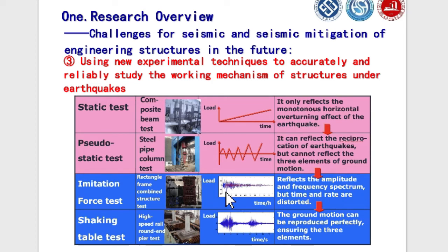For example, the shaking table at Central South University's lab is 4 meters by 4 meters. We need to design specimens as scaled models, but using scaled models introduces some problems. When we use the test results to reflect the behavior of the prototype structure, it will produce errors that we need to identify and correct.